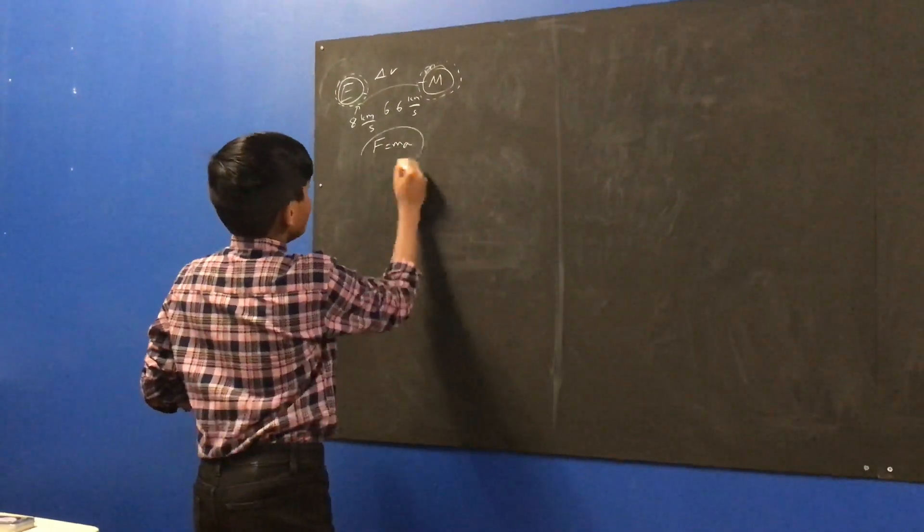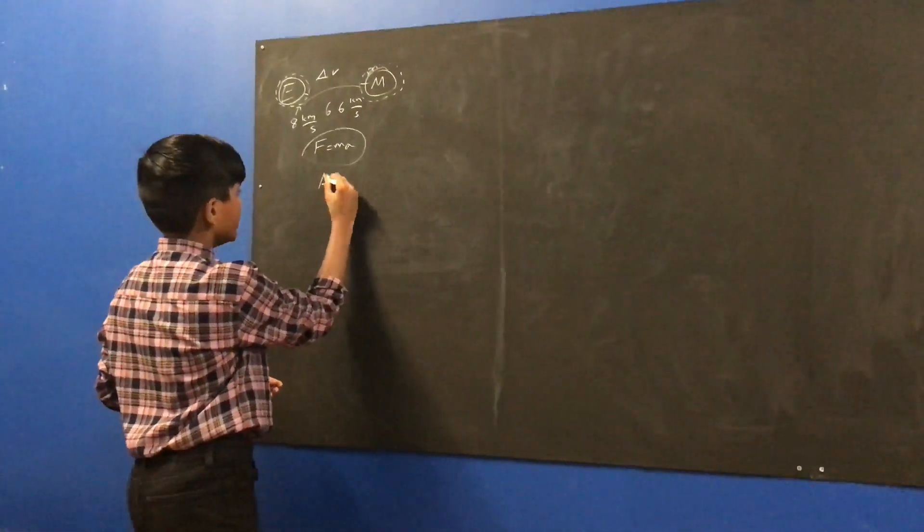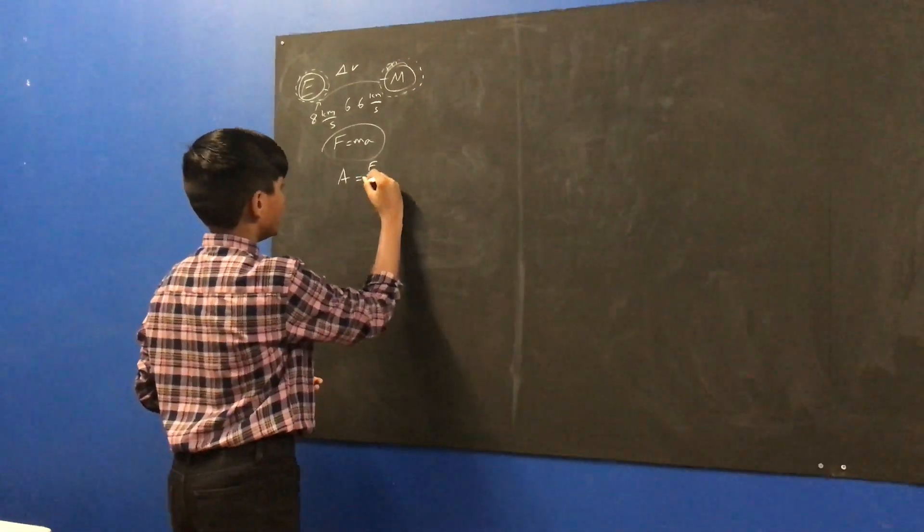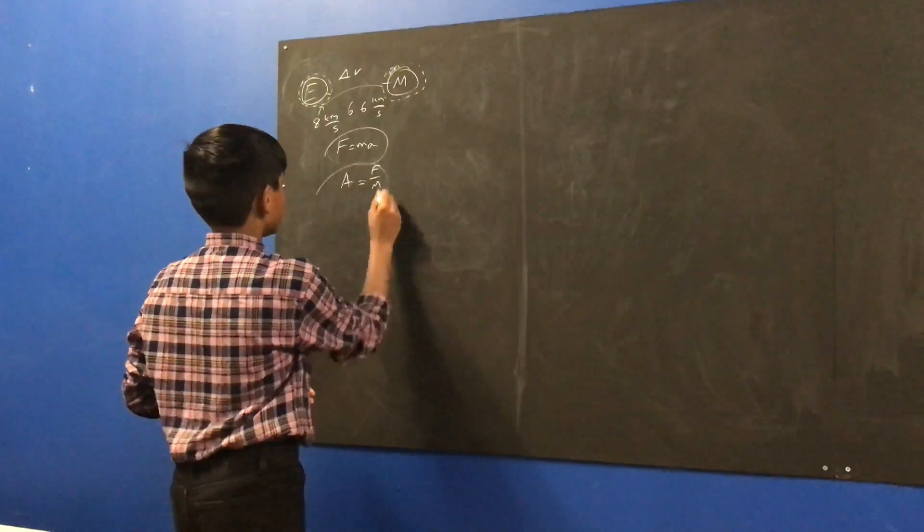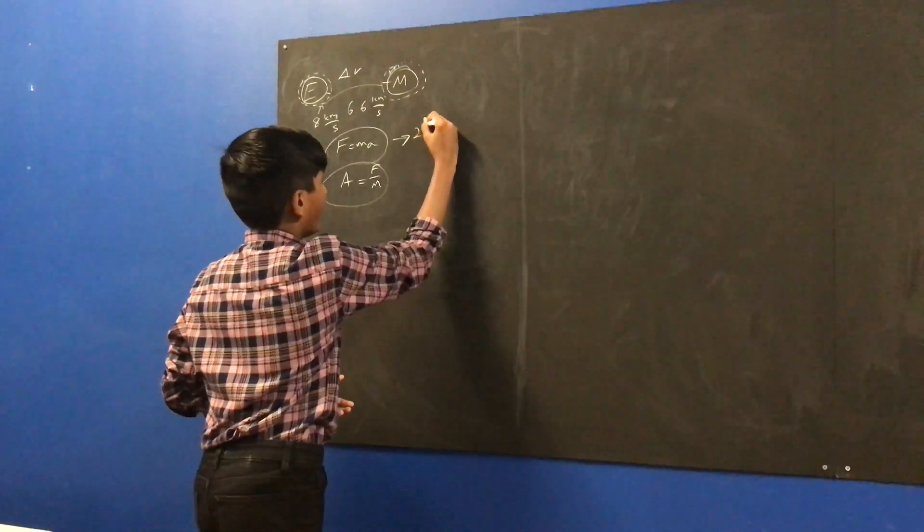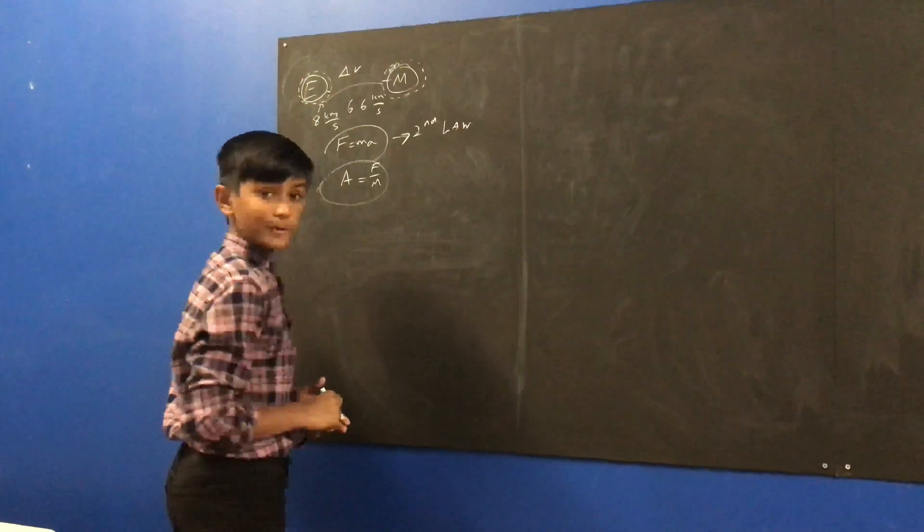So, this is Newton's second law of motion. And we can rearrange this to get our acceleration. It is F over M. So, this is a rearrangement of this.